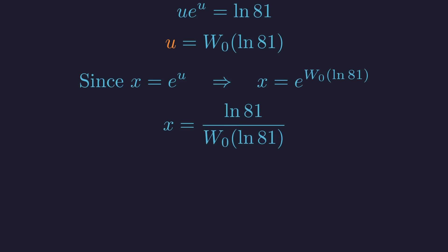Using a known property of the Lambert W function, this exact solution can also be written as the natural log of 81 divided by W sub-zero of the natural log of 81. This form is often useful in other contexts.